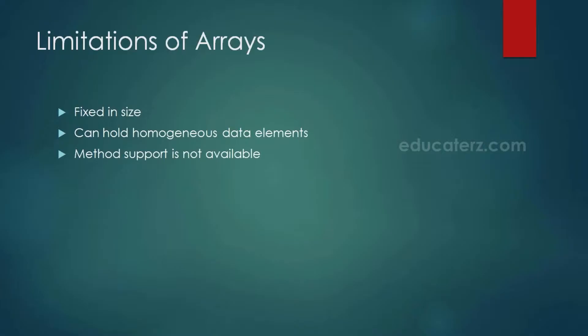The first limitation of arrays is that they are fixed in size. When we create an array we need to know the size in advance. Additionally, arrays can hold only homogeneous data elements. For example, if I create an integer array I can store only integers — I cannot store double or string values in it.